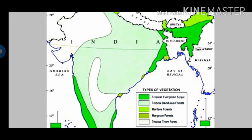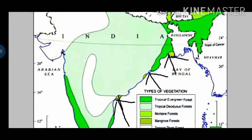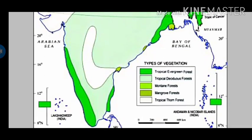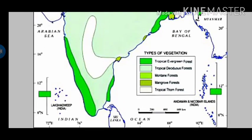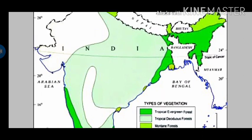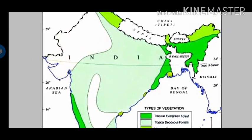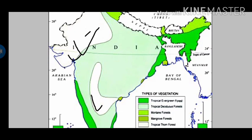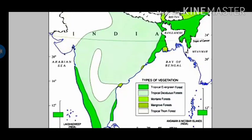Then we have mangrove forest. The light green color here is found near the deltas of rivers like the Sundarbans delta in the Ganga-Brahmaputra delta, Mahanadi delta, and Godavari delta. Next we have tropical thorn forest, which generally contains thorns, bushes, and scaly leaves. These are shown in white color on the map, found in parts of Rajasthan, Haryana, Gujarat, Madhya Pradesh, and Andhra Pradesh.